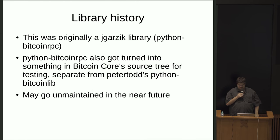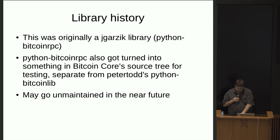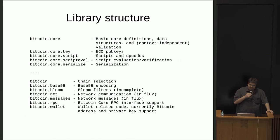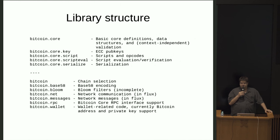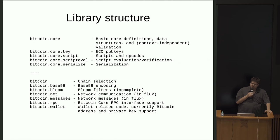Peter has been more interested in Rust lately, which I'll mention in a moment. So what does the library have? It has some of the basic data structures you'd expect, such as representing transactions and blocks. It has a basic ability to represent keys and secret keys. Also opcodes and scripts — it can represent scripts into a sort of parsed, abstract list of operations. It can evaluate scripts and verify them as well.